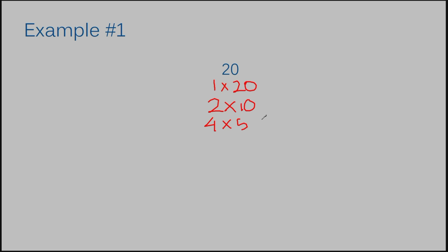Now I already know that I have listed all of my factors here. How do I know? Because the next number after four would be five, but we already have five listed. All of the numbers on the outside are my factors: 1, 2, 4, 5, 10, and 20. These are all factors of 20. I like to call this my horseshoe shape — if I go in a horseshoe shape from left to right, that gives me all my factors in order from least to greatest: 20: 1, 2, 4, 5, 10, 20.